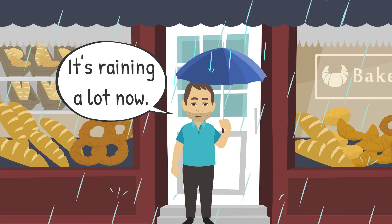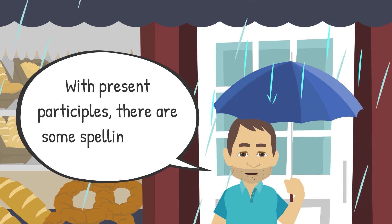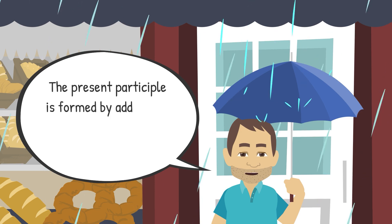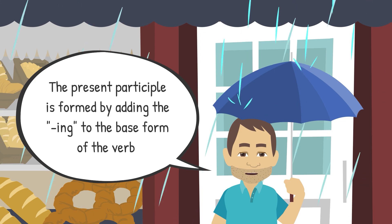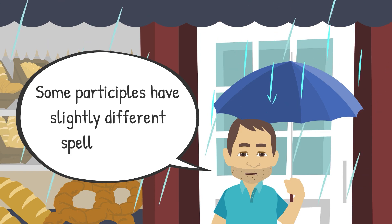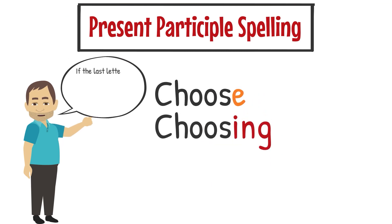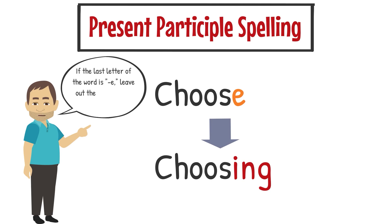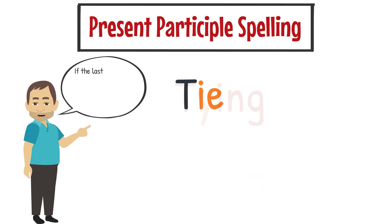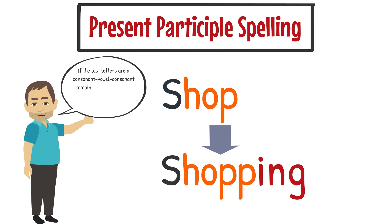With present participles, there are some spelling rules. The present participle is formed by adding the -ing to the base form of the verb. Some participles have slightly different spelling rules. Add the -ing ending to form regular present participles. If the last letter of the word is e, leave out the e and add the -ing. If the last letters of the word are ie, then change the ie to y. If the last letters are a consonant-vowel-consonant combination and the final syllable is stressed, double the last letter. Double the last letter unless the word ends with w, x, or y.